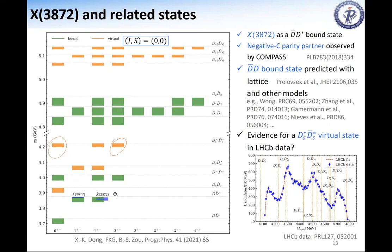The positive parity poles include the X(3872) and its partners — for instance, a 1+- partner that might correspond to the so-called tilde X(3872) observed by COMPASS a few years ago — and also a 0++ state discussed by Olegel yesterday and mentioned by Sasa, which was obtained in their lattice results as a DD-bar bound state just below the DD-bar threshold. There are also several other states: 0++, 2++, and another 1+- — these are the D*D-bar states.